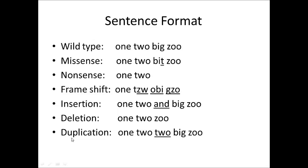Lastly, we have a duplication mutation. This is where you simply duplicate one of the codes. So the sentence reads: one, two, two, big, zoo. We just duplicated this codon, this triplet. Those are the different types of mutations in sentence format.